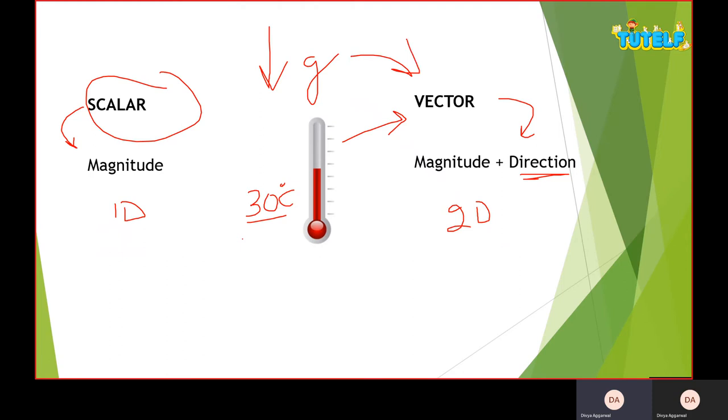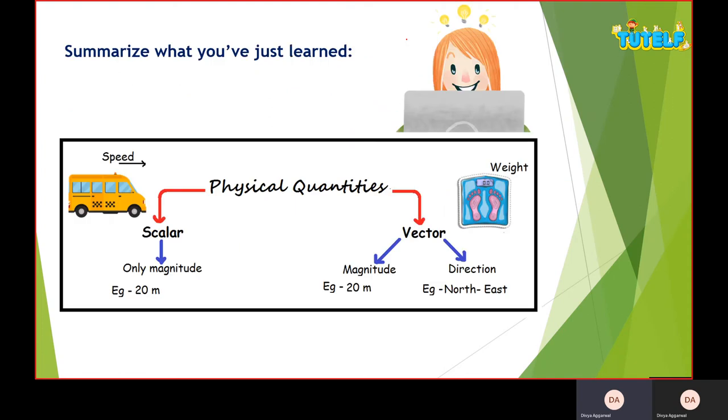Acceleration is a change in velocity. Since velocity has direction associated with it, acceleration is also a vector quantity.